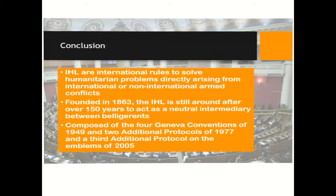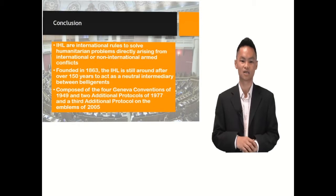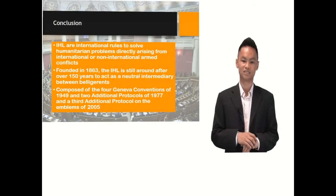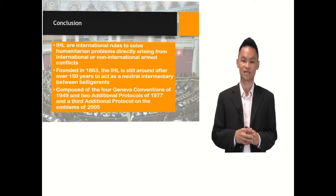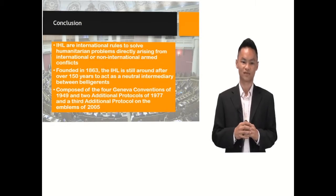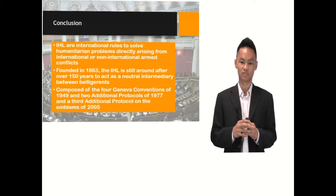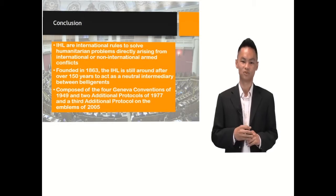In conclusion, IHL are international rules to solve humanitarian problems arising from international or non-international armed conflicts. It was founded in 1863, and IHL is still around after over 150 years to act as a neutral intermediary between belligerents. IHL is composed of the four Geneva Conventions of 1949, two additional protocols of 1977, and a third additional protocol on the emblems of 2005. I hope you have learned something from this video, and thank you very much.